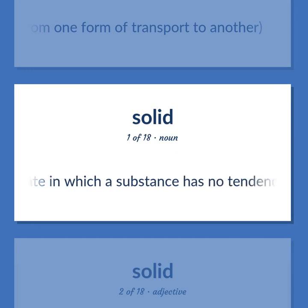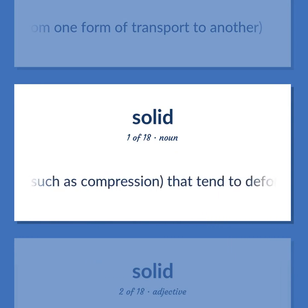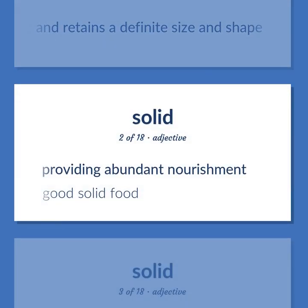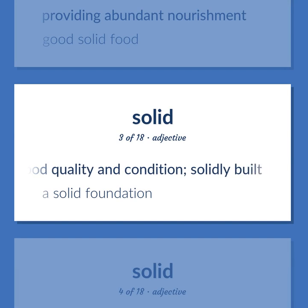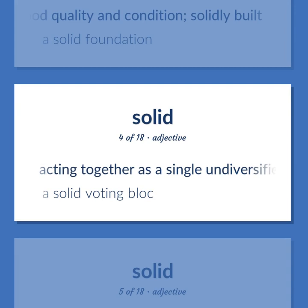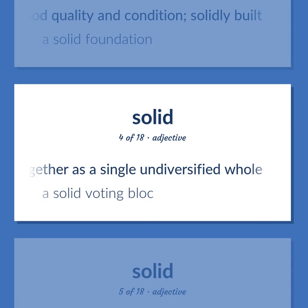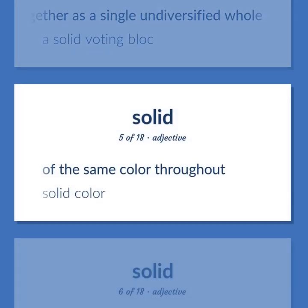Solid: the state in which a substance has no tendency to flow under moderate stress, resists forces such as compression that tend to deform it, and retains a definite size and shape. Providing abundant nourishment — good solid food. Of good quality and condition, solidly built — a solid foundation. Acting together as a single undiversified whole — a solid voting block. Of the same color throughout — solid color.